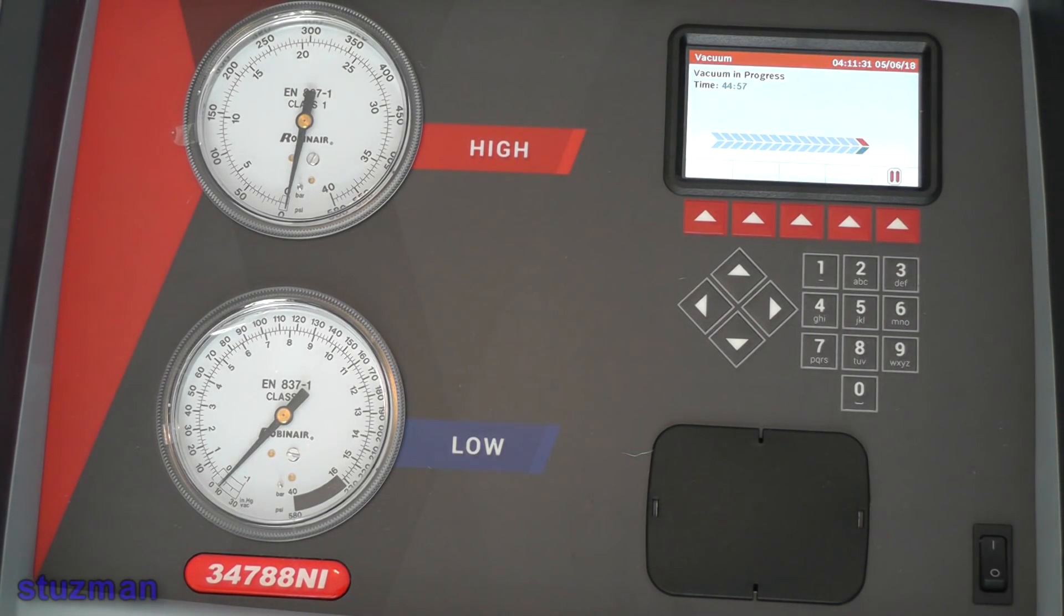So as you can see, it's going to pull the vacuum for 45 minutes and you can set that to whatever you want. The last job I did, it saves the settings from whatever it was last time, and I had it set at 45 minutes. I think the default is 30 minutes. So we're going to let that go, and then when it's almost over I'll bring you back online so you can see the next step.